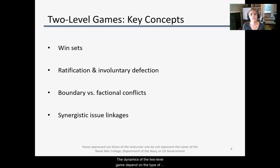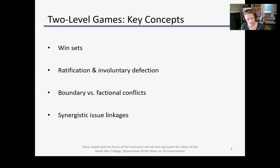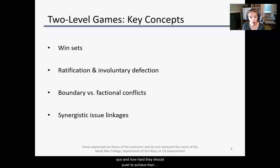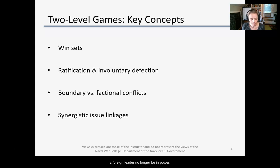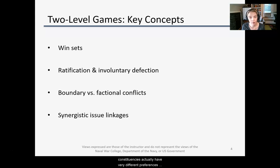The dynamics of the two-level game depend on the type of disagreement domestically within a state. Putnam calls these boundary versus factional conflicts. In a boundary conflict, almost all domestic constituencies agree on their preferred outcomes, but disagree about the acceptability of the status quo and how hard they should push — for example, all might agree they prefer another state not obtain nuclear weapons, but disagree on how hard to push. In a factional conflict, different domestic constituencies have very different preferences — for example, in trade negotiations, representatives of major corporations and labor unions might actually want different outcomes.